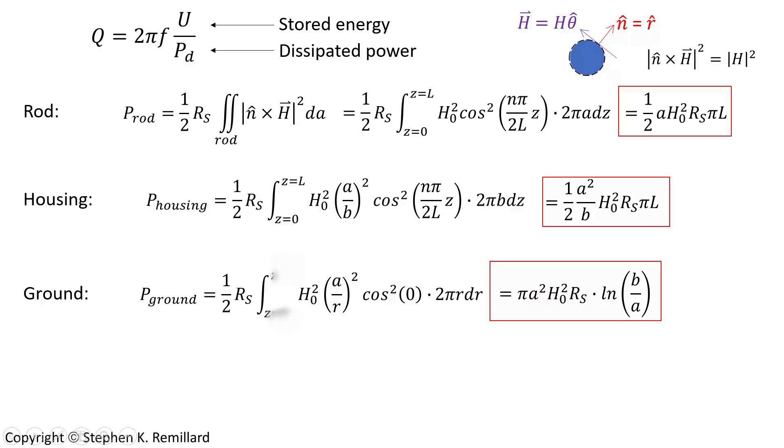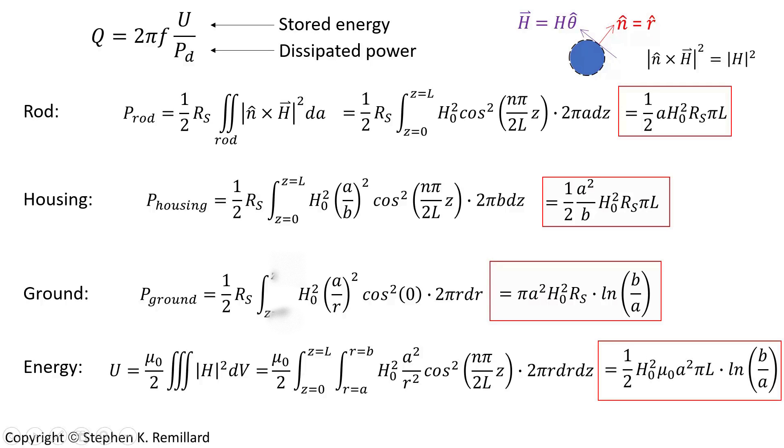Finding the energy stored in the resonator is a volume integral of one half mu naught H squared is the energy density in the volume. Integrate that over volume, and write out the volume element 2 pi r dr dz, and integrate it over all of the space in the cavity, and you have an expression for the energy stored per cycle. That's in units of joules per hertz in the resonator.